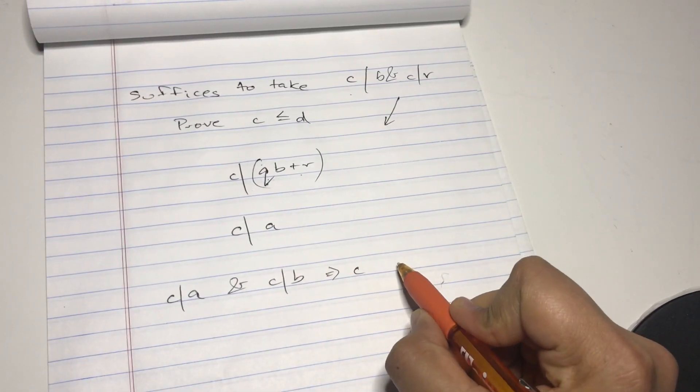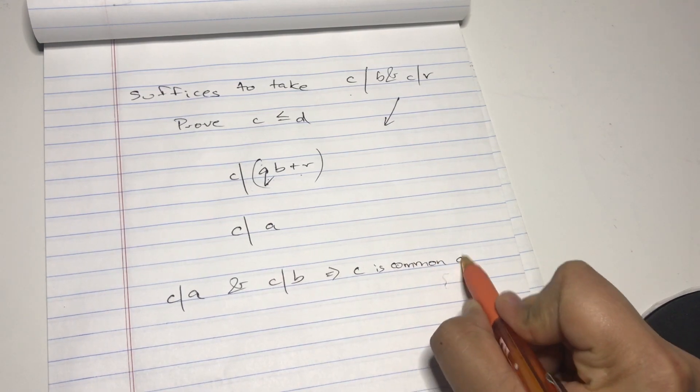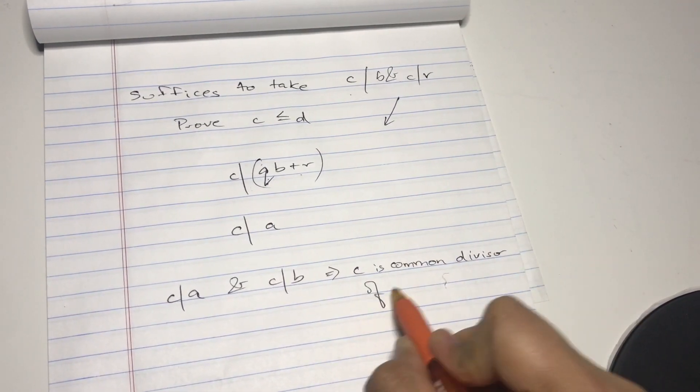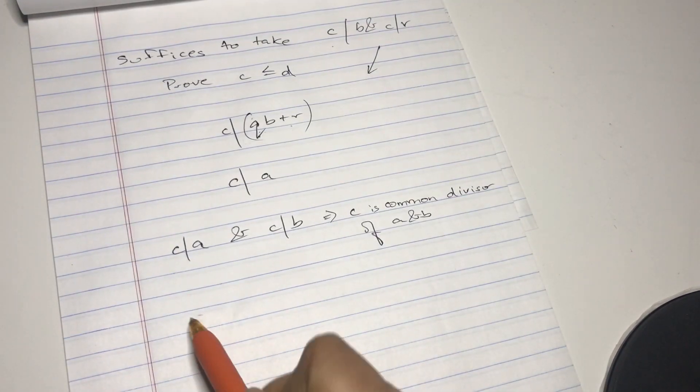Is a common divisor of a and b. In the beginning, we actually had taken d is the greatest common divisor of a and b, right?